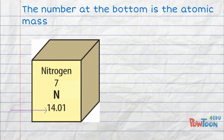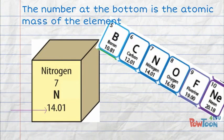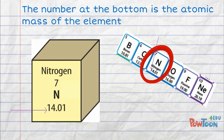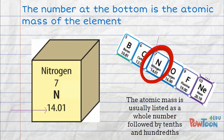The number at the bottom is the atomic mass of the element. The atomic mass is usually listed as a whole number followed by tenths and hundredths.